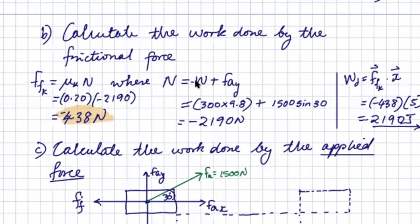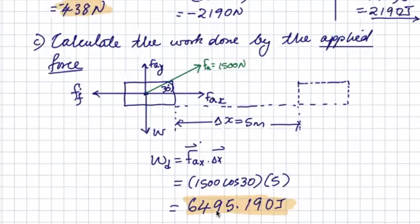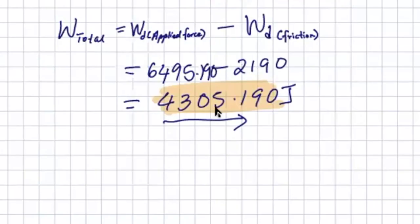This was the frictional force, and that's the work done by frictional force, and this is the work done by the x component of the applied force. The difference between them is 4305.190 joules.